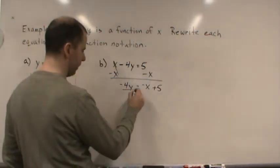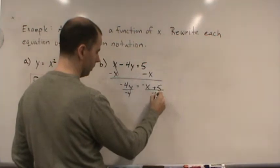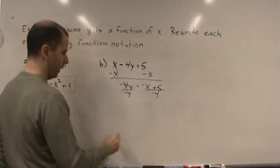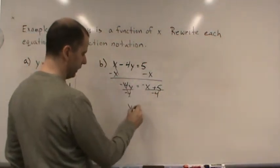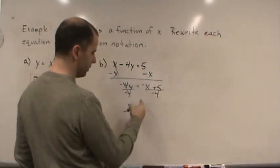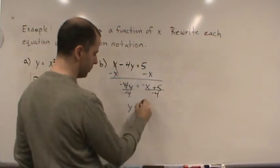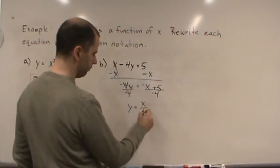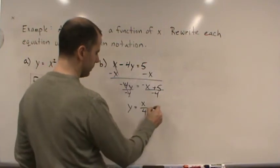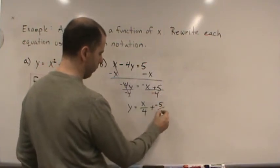And now we're going to divide both sides by negative 4. So what do we end up with? We end up with y equals - we can split this up into two fractions, so this is going to be negative x over negative 4, which is x over 4, plus negative 5 fourths.